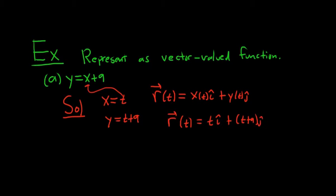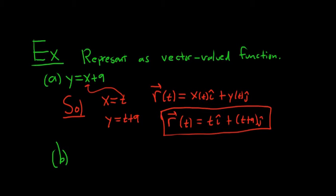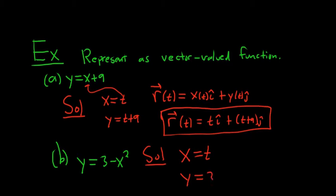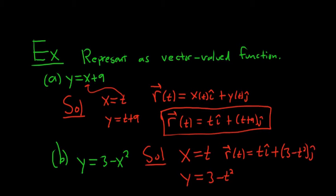And that's it — we've taken the plane curve and represented it as a vector-valued function. Let's do another one. For part b, say we have y equals 3 minus x squared. Again, we let x equal t, so y equals 3 minus t squared. Writing our answer, the vector-valued function is t i-hat plus (3 minus t squared) j-hat.